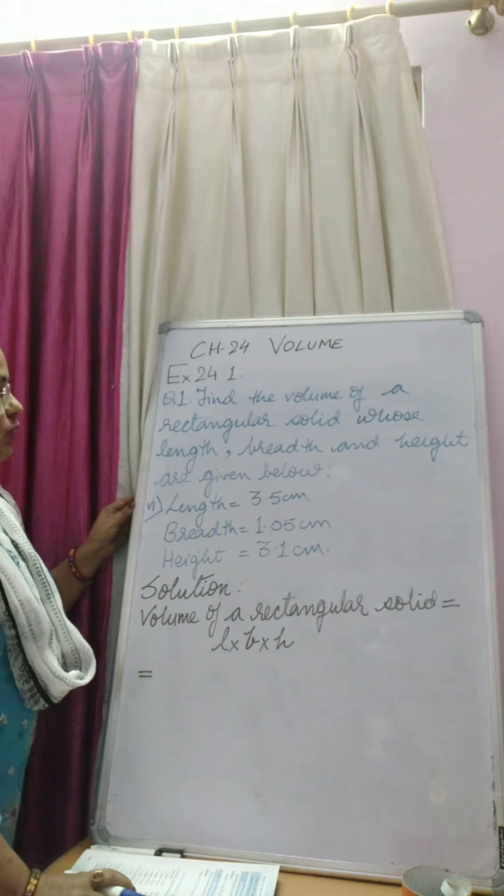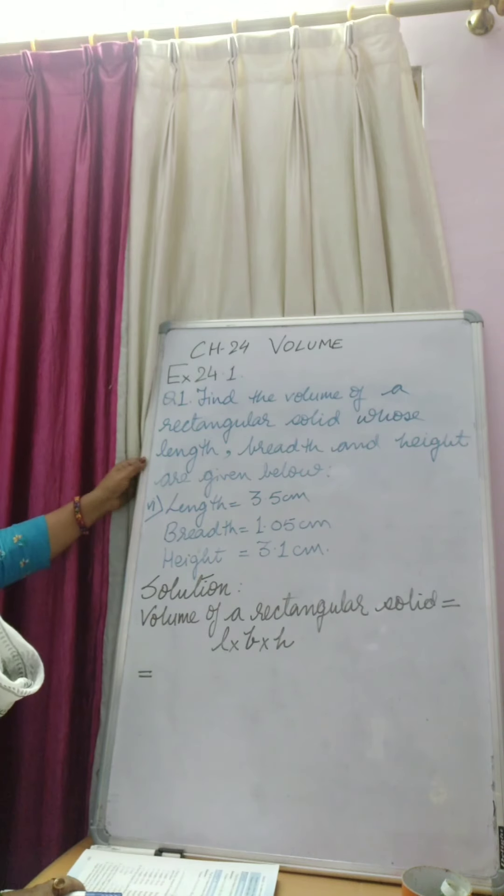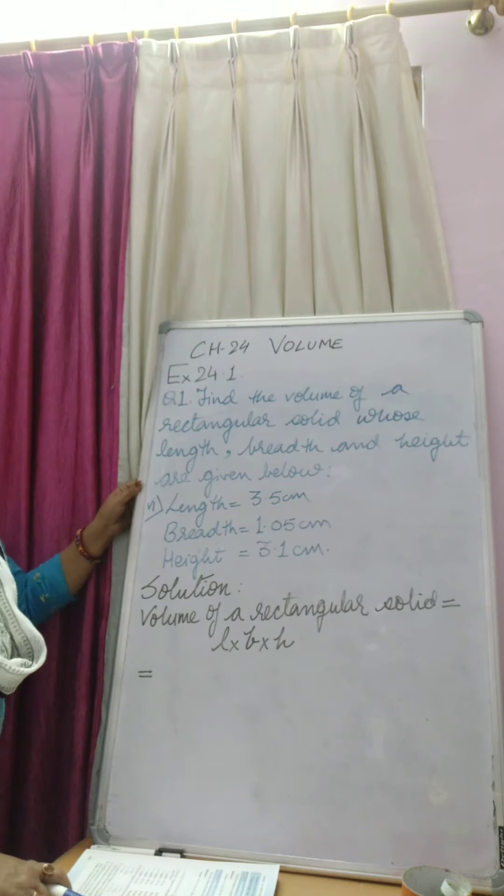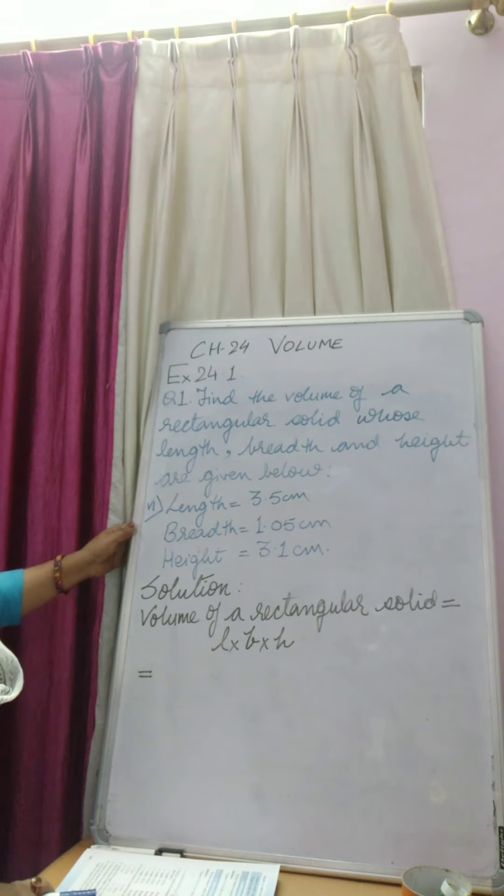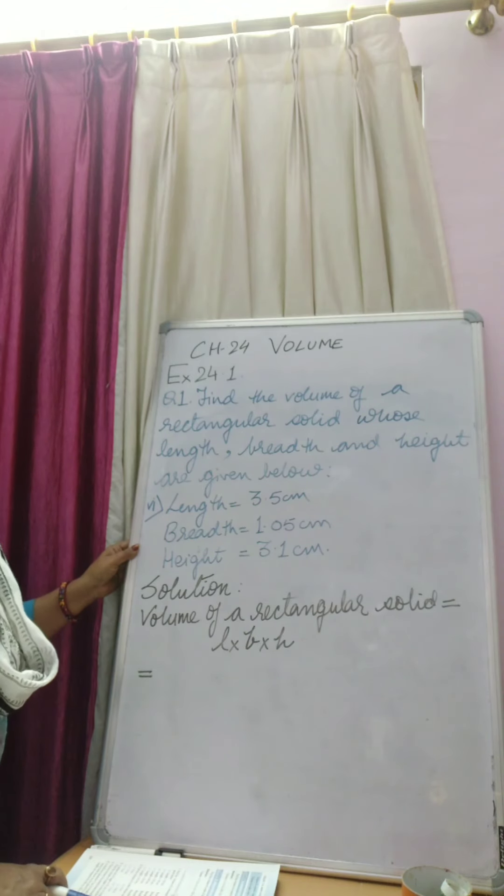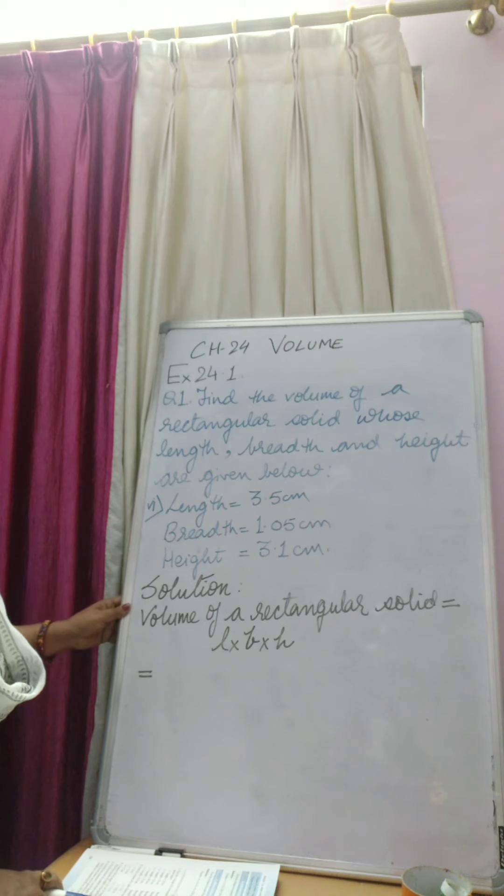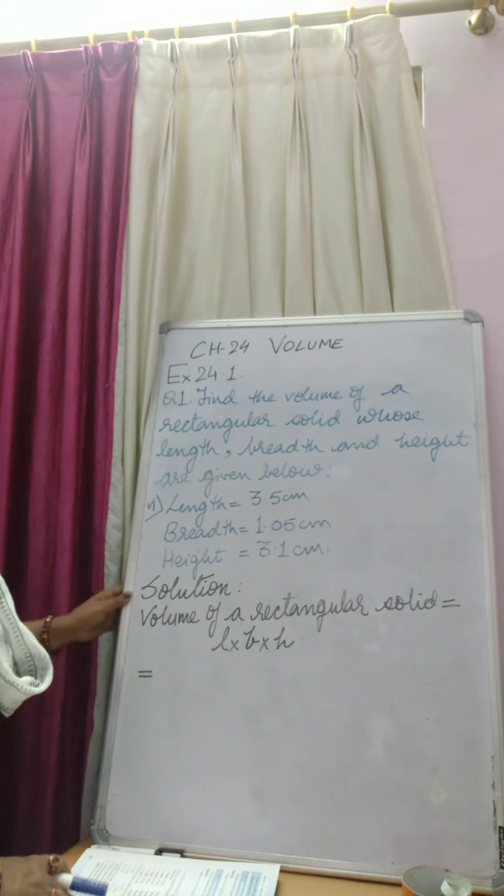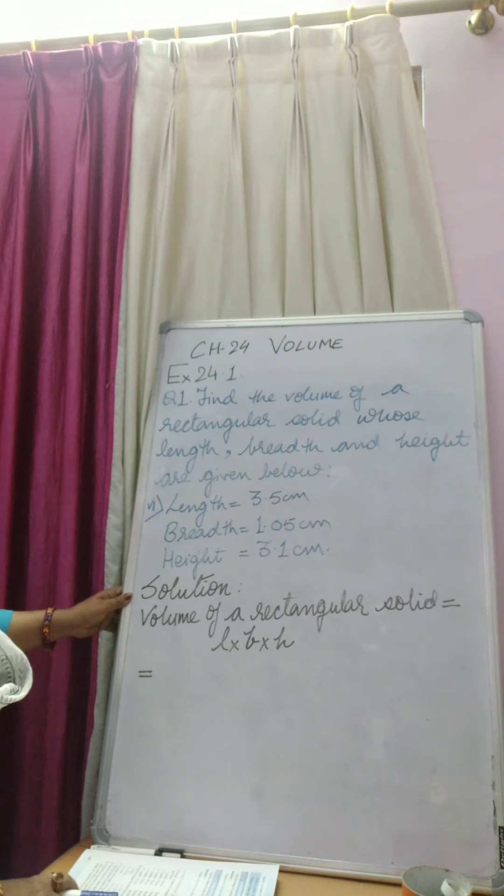Find the volume of a rectangular solid whose length, breadth and height are given below. Length 3.5 cm, breadth 1.05 cm, height 3.1 cm. Now what we have to find out is the volume. So let us move to the solution.